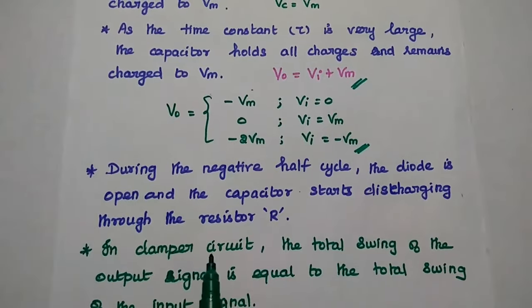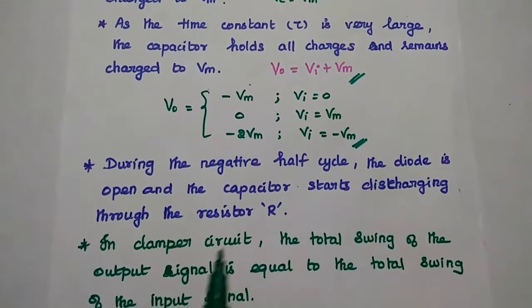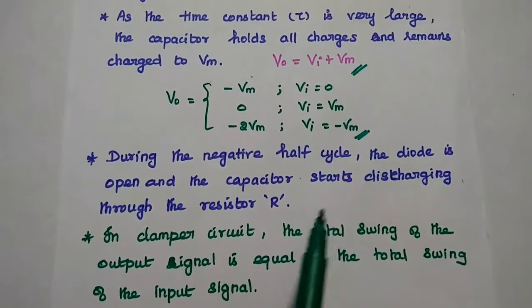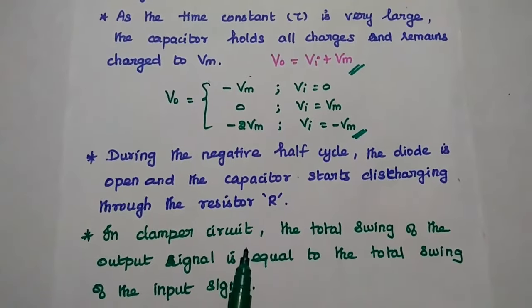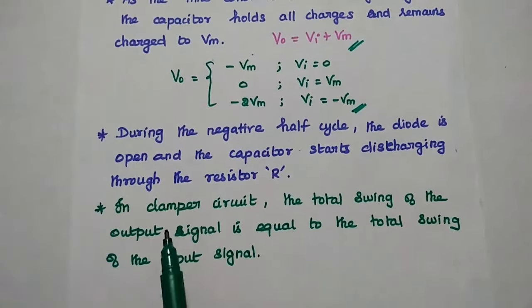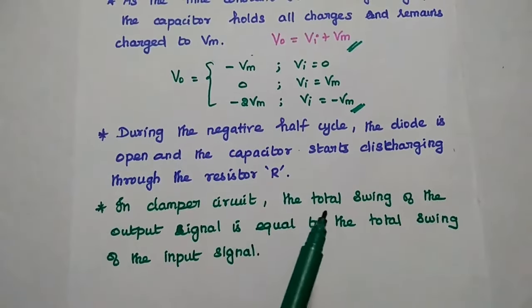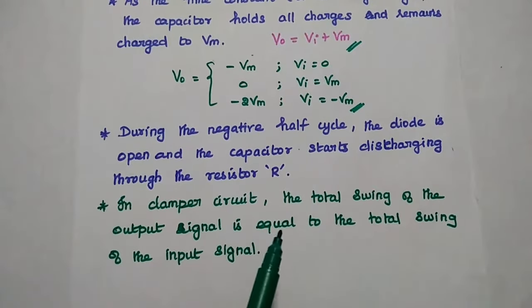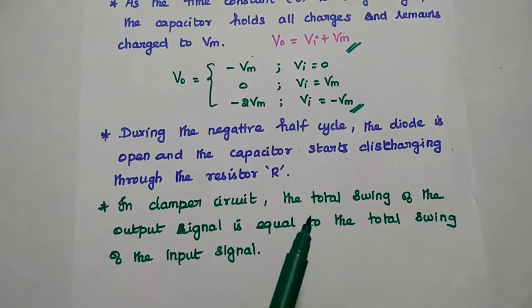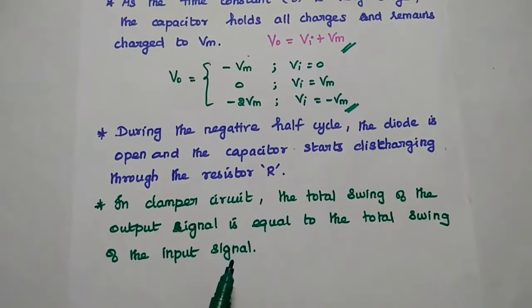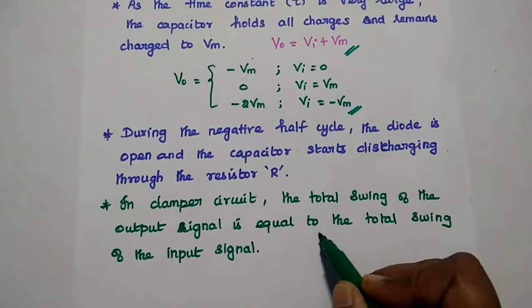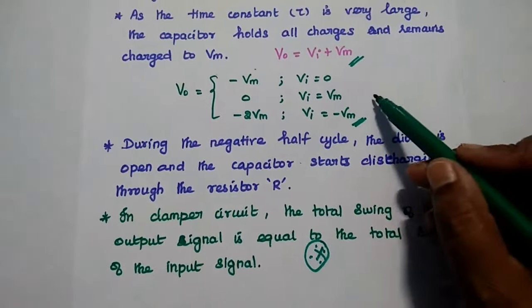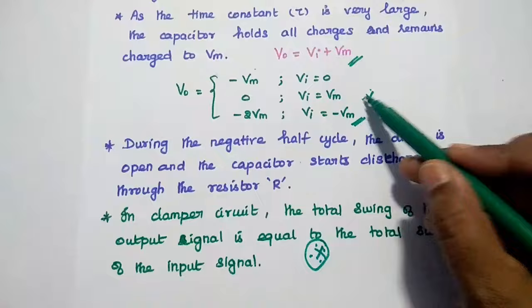During the negative half cycle, the diode is open and the capacitor starts discharging through the resistor. In a clamper circuit, the total swing of the output signal is the same as the total swing of the input signal — this point is very important to obtain the correct output.